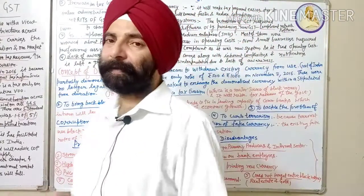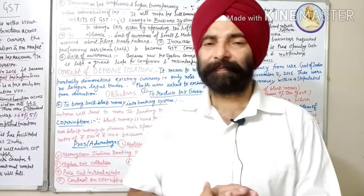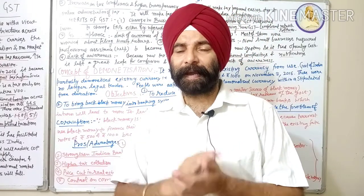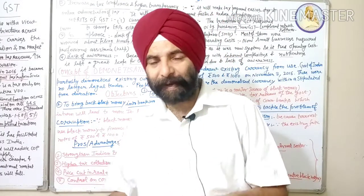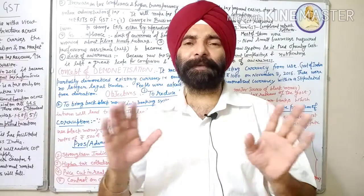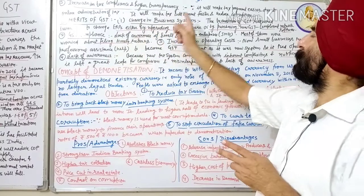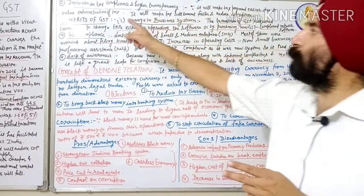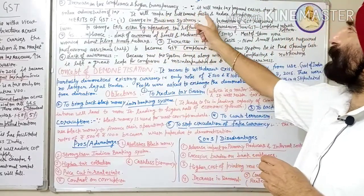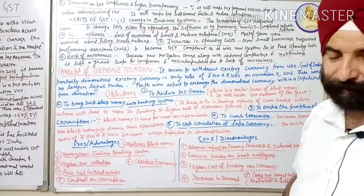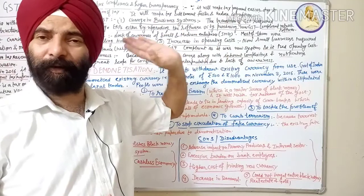The fifth merit of GST is increase in tax compliance and higher transparency. It is now easy to file and pay taxes. It saves effort and time, and there is no possibility of corruption. Due to online administration of the tax, it makes tax settlement faster and reduces corruption. These are all the merits of GST.